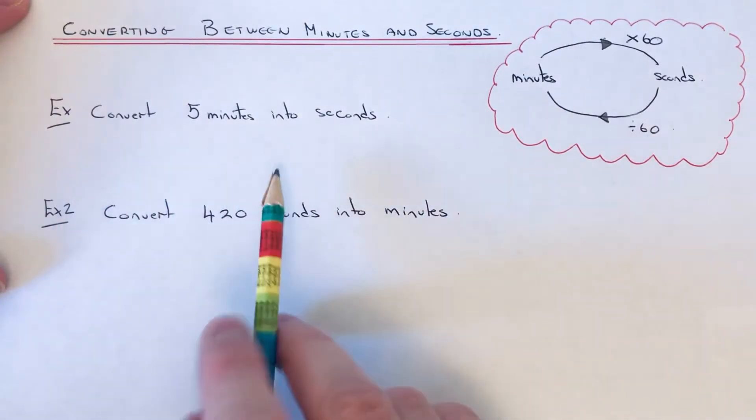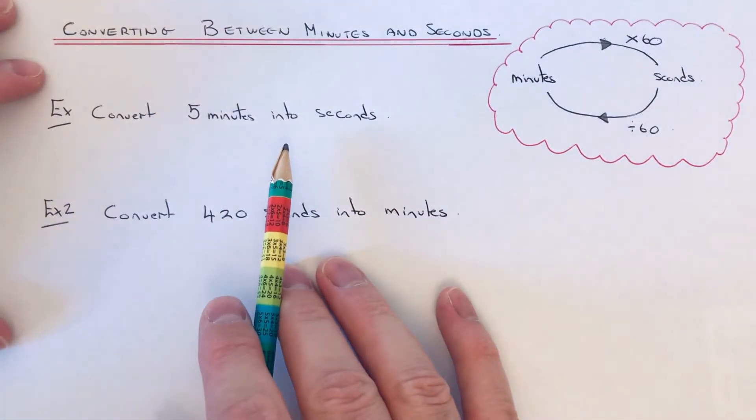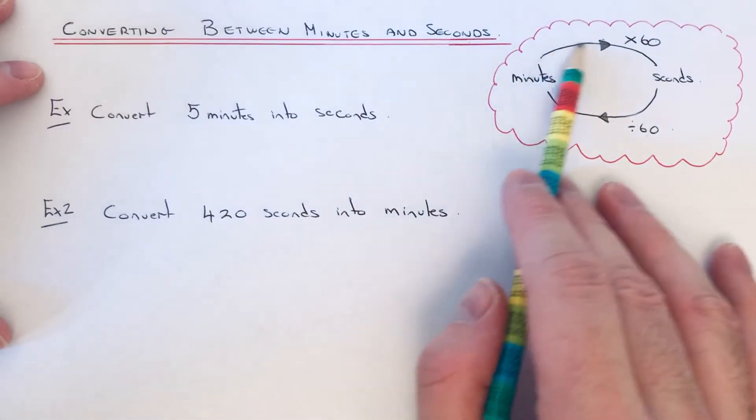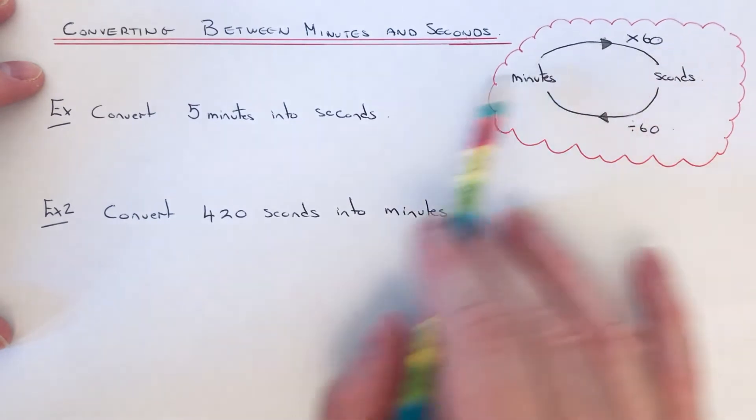So let's have a look at the two examples here. Our first one: we've got to convert 5 minutes into seconds. So minutes to seconds, we times by 60.